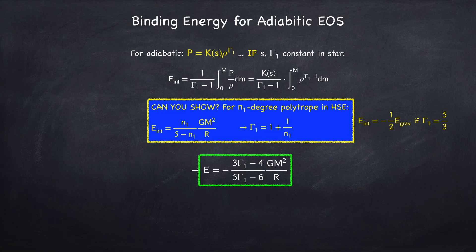If gamma 1 equals 5 thirds, then the total binding energy will be negative 3 sevenths times gm squared over r. So this is true if the adiabatic assumption holds. If you're finding this video interesting so far, be sure to like and subscribe, and maybe share it with a few friends.